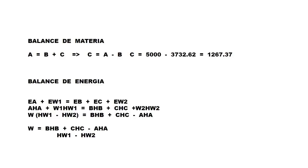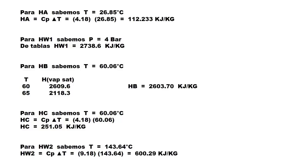We begin calculating the enthalpies. For the enthalpy of A, what enters is seawater (salmuera), and the problem tells us to treat it with the properties of water. Therefore, HA = Cp(water) × T.